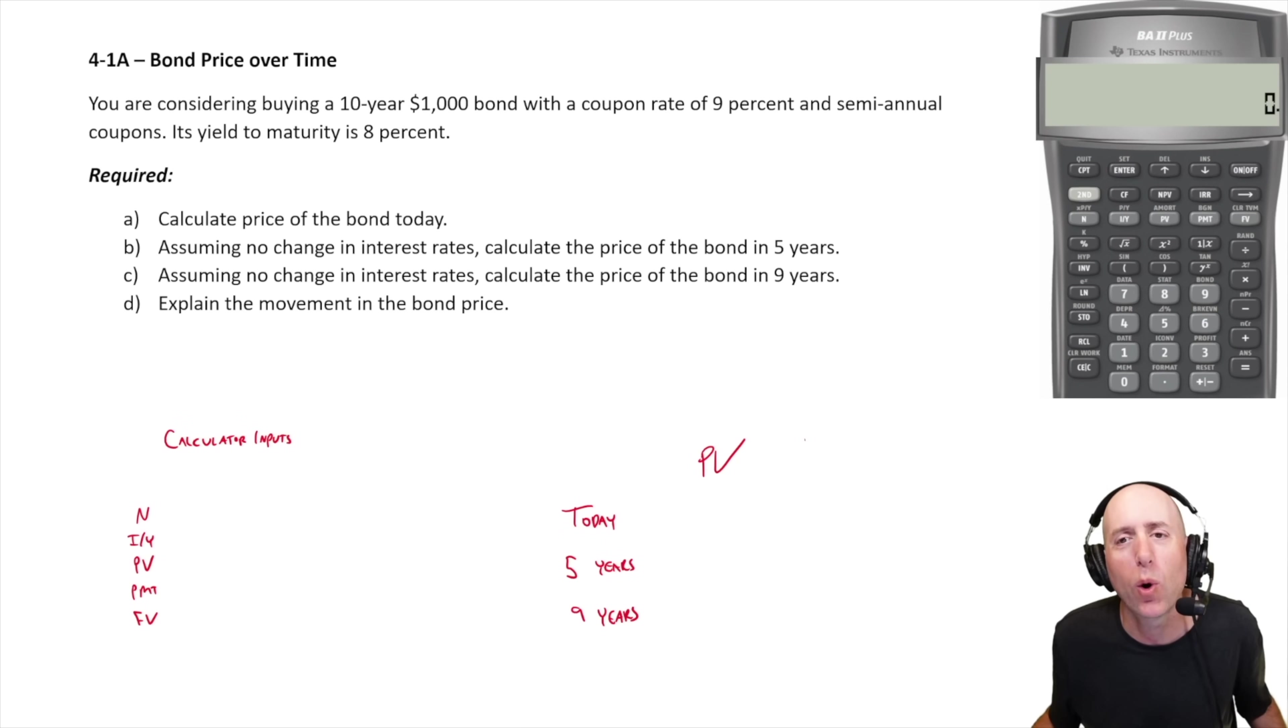Let's run through problem 41A. I'll read through the question and we'll discuss it as we go. You're considering buying a 10 year $1,000 bond with a coupon rate of 9% and semi-annual coupons. So 10 years semi-annual coupons means there's 20 payments, 20 interest payments. Its yield to maturity is 8%.